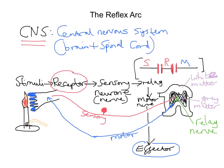One thing to add is that the receptor and effector don't always have to be the same thing. In our example, the receptor and effector were both in the hand. But imagine the scenario: you're driving along the road and someone with a football jumps out in front of the car. In that case, the stimulus would be the person who's jumped out in the middle of the road. The receptor would be your eyes detecting that stimulus — so you see the person jumping out. You transmit that sensory information down to the spine and back along a motor nerve. But the motor nerve this time would go to the leg muscles, because they would be the effectors — you would use the muscles of the leg to brake the car and slow it down.